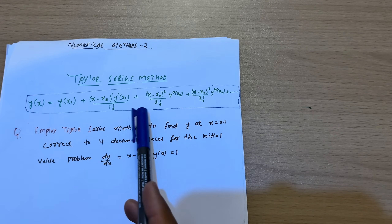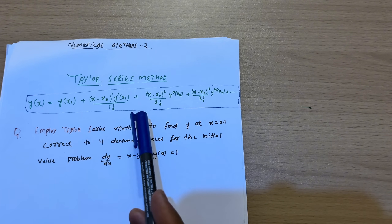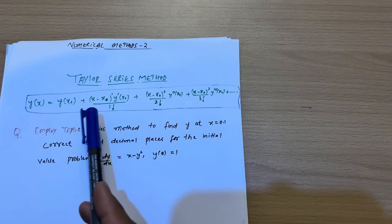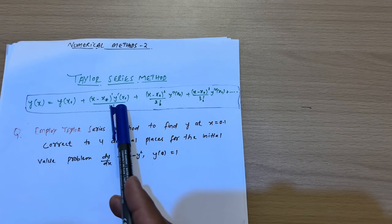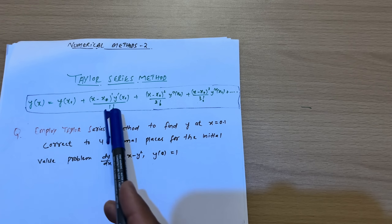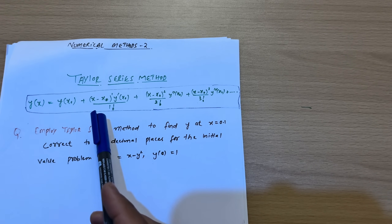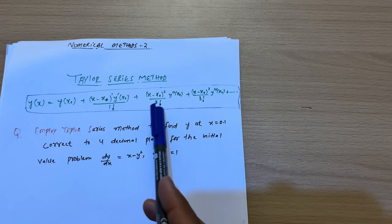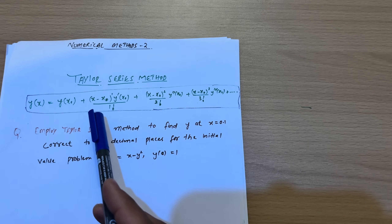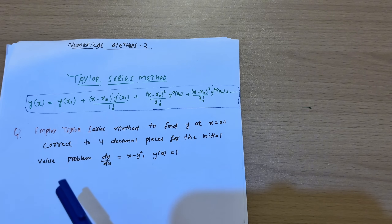In this video we'll be learning the Taylor series method. You don't need to remember the formula itself — it will be available in the data handbook. The only thing you need to do is calculate the unknown values in the series and put those values into the series to get the required result.